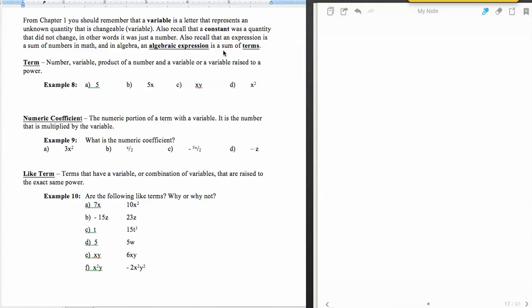So let's talk about a term. A term is a number, a variable, a product of a number and a variable, or a variable raised to a power. Or it could be products of those things. So example number eight here is just to show you a bunch of things that are terms. So five is a term, 5x could be a term, xy could be a term, x squared could be a term.